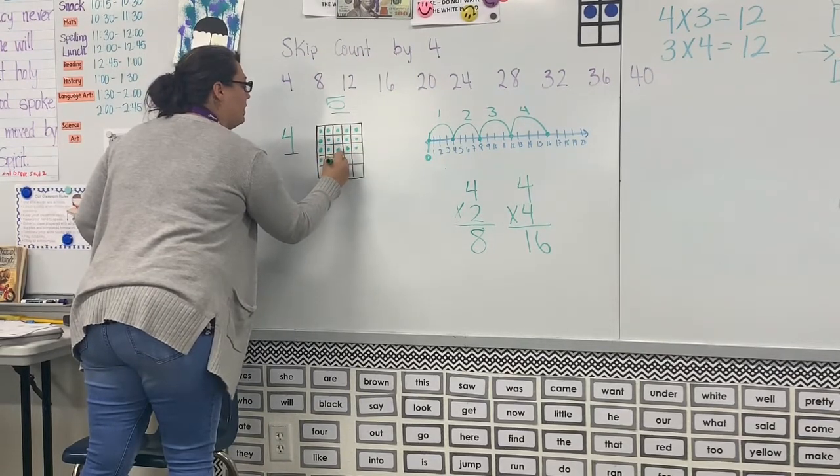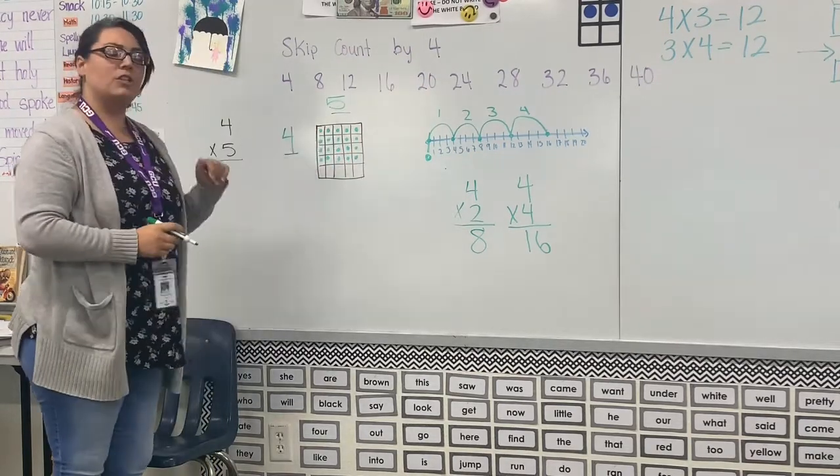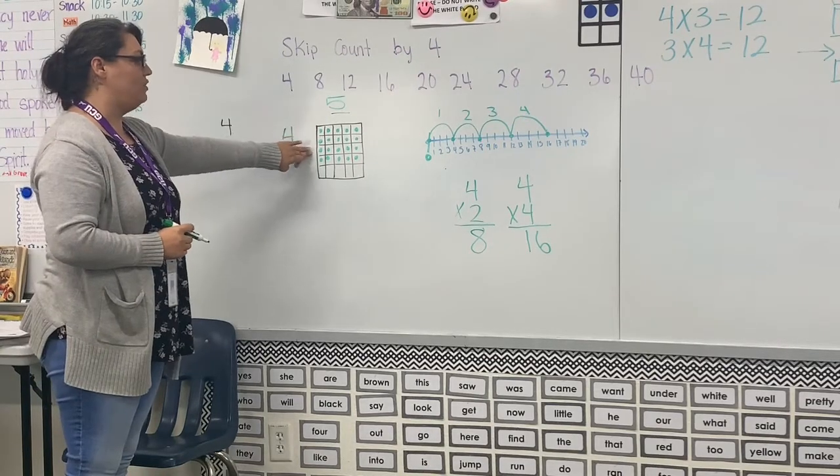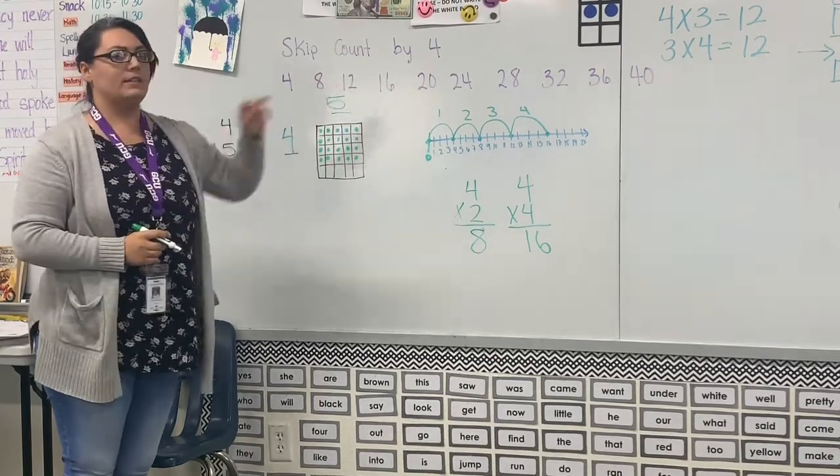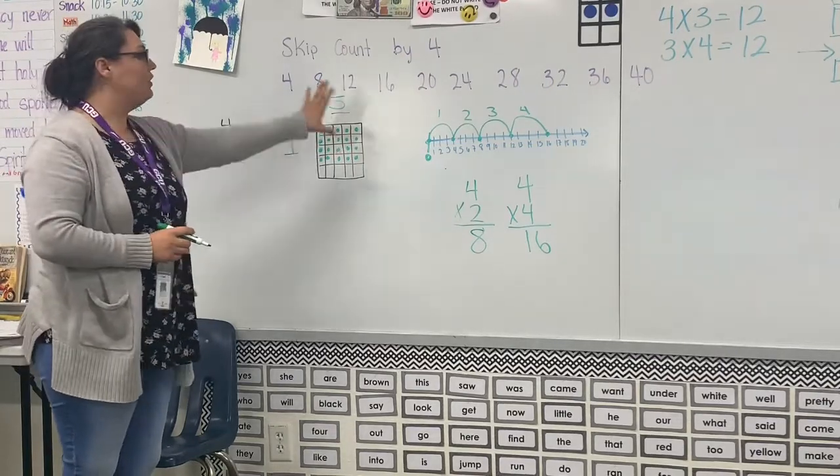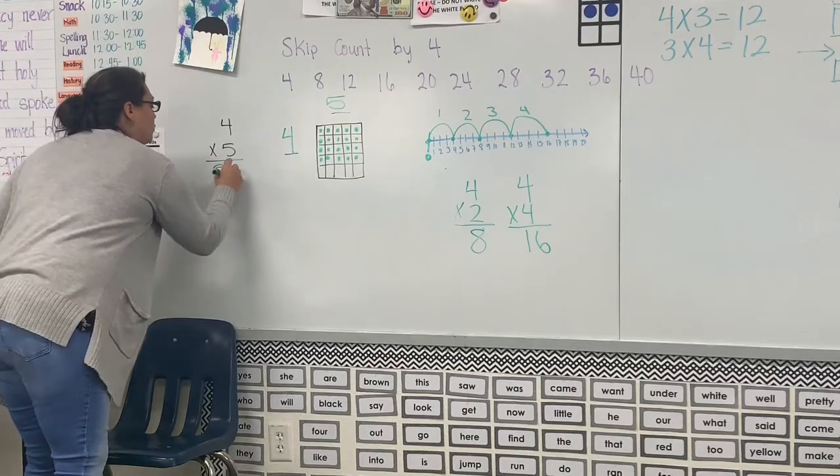After you fill it in, you can count them up so that you can see what 4 × 5 is. You can count by fives if you don't remember your skip counting by fours, but you do need to review that. So 4 × 5 is 20.